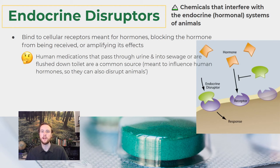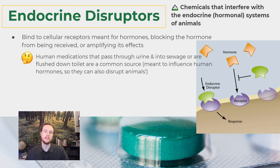Since medications are created to alter human endocrine systems, they can have very different consequences in animal endocrine systems when introduced into ecosystems. This can happen simply by passing through our bodies and exiting as urine into wastewater. Sewage that's not treated properly can sometimes introduce endocrine disruptors from medications we're taking. It could also happen when medication is flushed down the toilet, which is why it's really important to properly dispose of old medications.